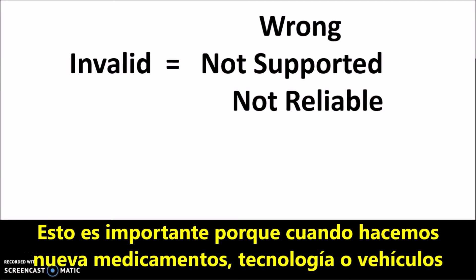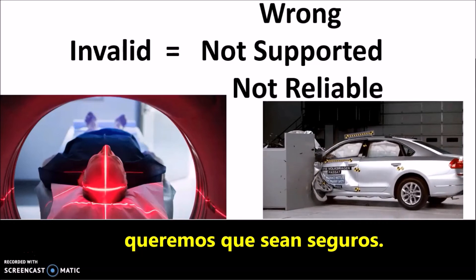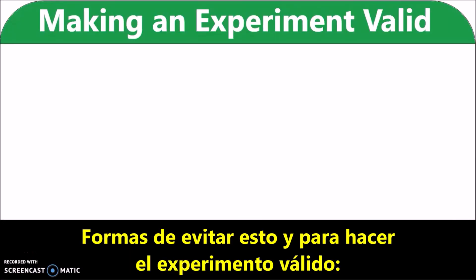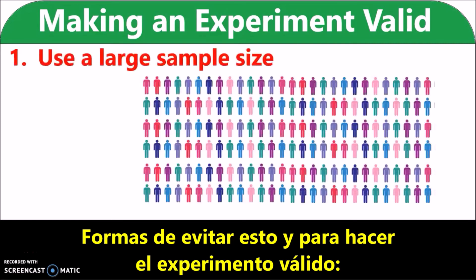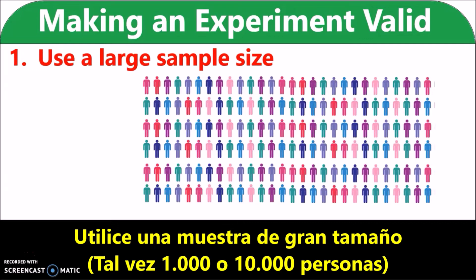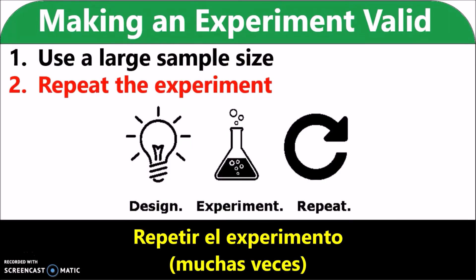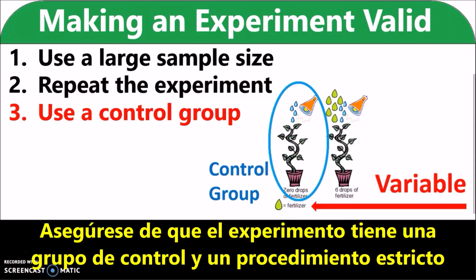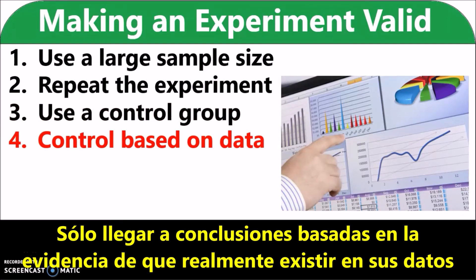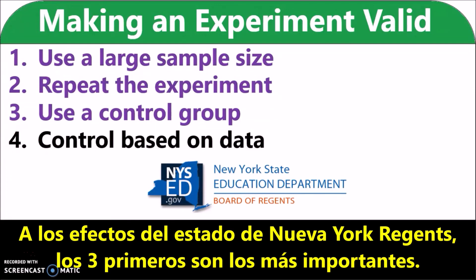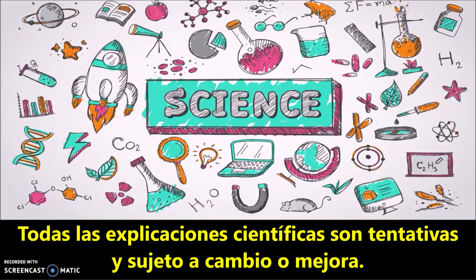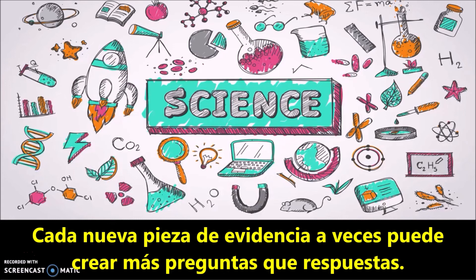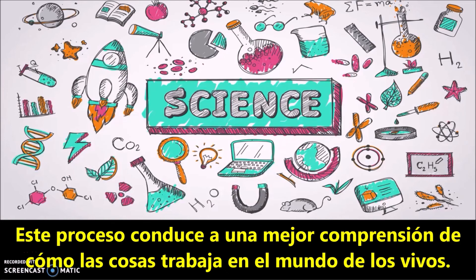This is important because when we make new medicines, technology, or vehicles, we want them to be safe. Ways to make the experiment valid: use a large sample size, maybe a thousand or ten thousand people; repeat the experiment many times; make sure the experiment has a control group with a strict procedure; and only make conclusions based on evidence that actually exists in your data. For the purposes of the New York State Regents, the first three are the most important to know. All scientific explanations are tentative and subject to change or improvement. Each new piece of evidence can sometimes create more questions than answers, leading to a better understanding of how things work in the living world.